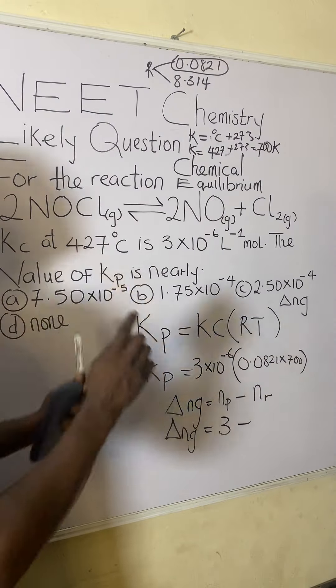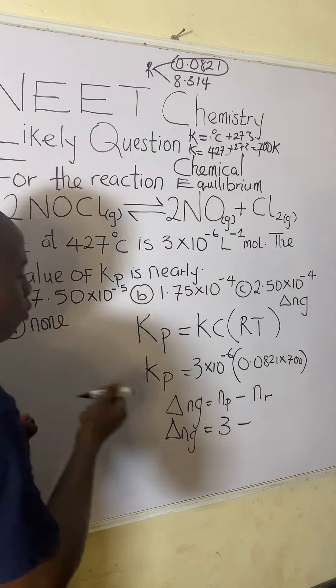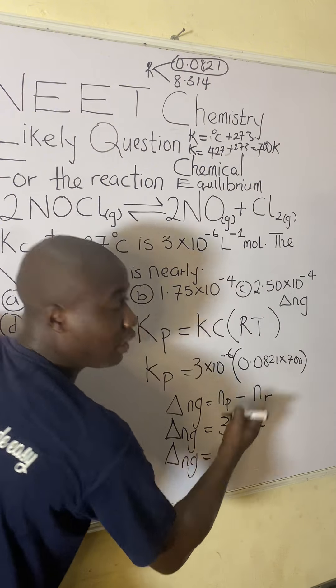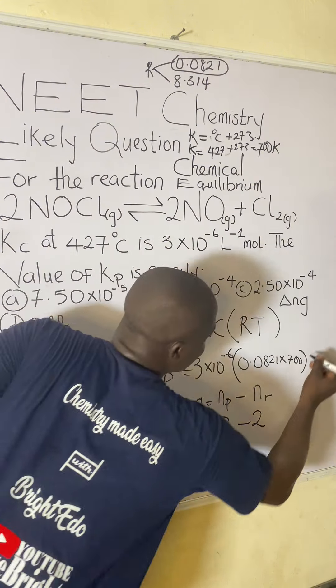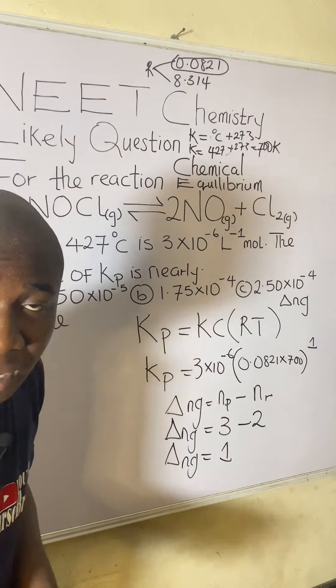What about the reactant? In my reactant, I had just one species, and that one species was carrying how many moles? Two moles. So it's going to be two. So numbers of moles of the gases is three minus two. That is one. So raise everything to power one. I believe you are following.